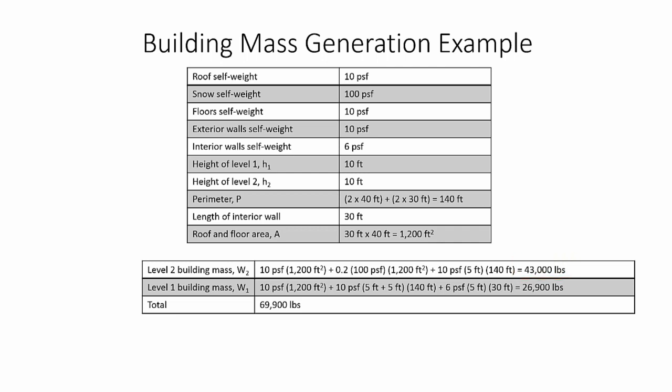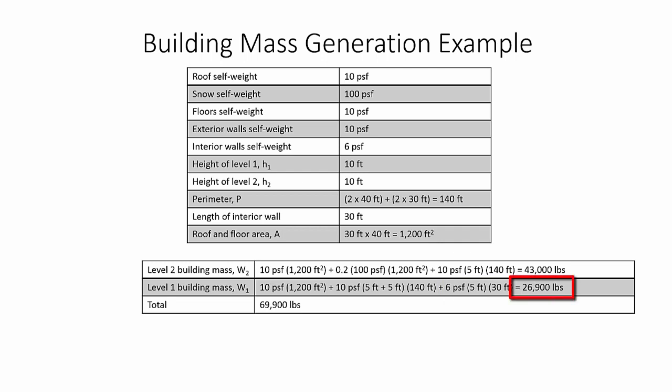For Level 1, the floor self-weight is multiplied by the floor area, added to the self-weight of the exterior walls multiplied by the sum of half the height of Level 1 and Level 2, and by the perimeter of the exterior walls. The last component to add is the self-weight of the interior wall multiplied by half the height of the wall on Level 1 and by the length of the wall. All of this together gives the building mass for Level 1.